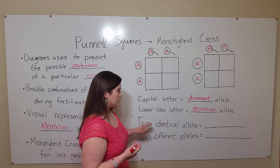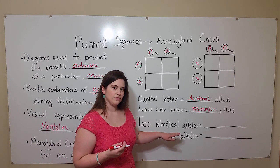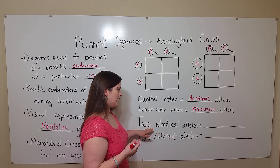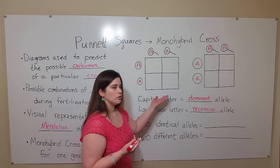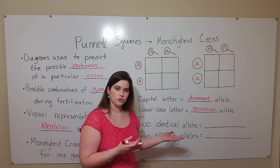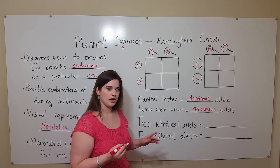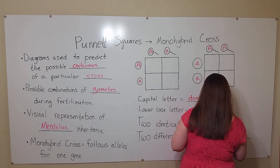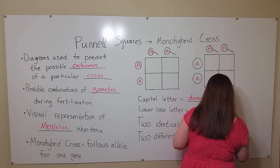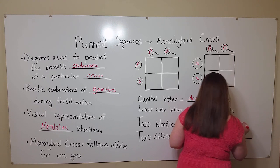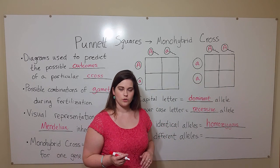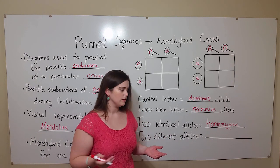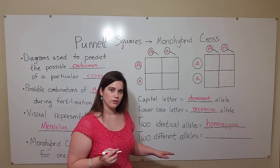When talking about individuals that have two alleles, sometimes individuals can have two identical alleles — two dominant alleles, for example, or two recessive alleles, rather than one of each. This is called being homozygous. It's also possible for an individual to have two different alleles, for example one dominant and one recessive. This is called being heterozygous.